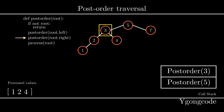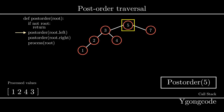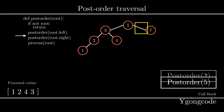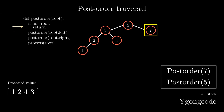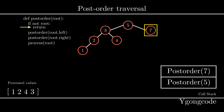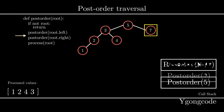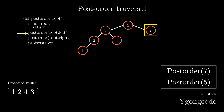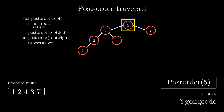We process the value at post-order(3), pop it off the stack, and move on to post-order(5). At post-order(5), since we just finished traversing its left subtree, we begin to traverse its right subtree, node 7. We push post-order(7) onto the call stack. At post-order(7), we traverse its left subtree, which is empty — push and pop post-order(None) — then traverse the right subtree, also empty — push and pop post-order(None). We process the value at post-order(7), pop it off the stack, and move back to post-order(5).